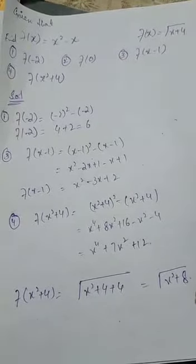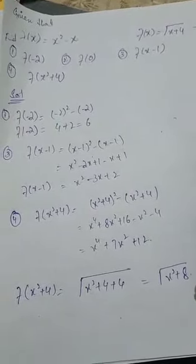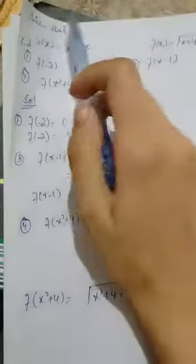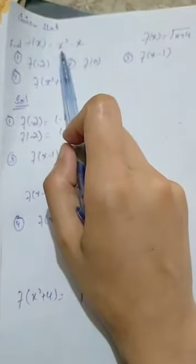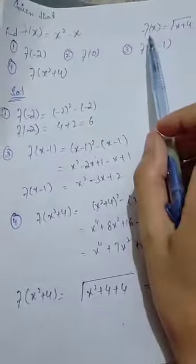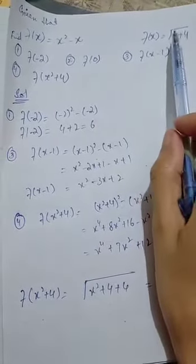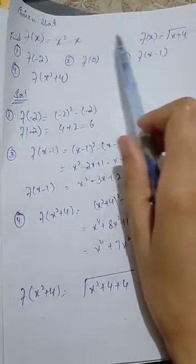Okay students, today we have to do Exercise 1.1. We have the first question of 1.1. Given that f of x is equal to x squared minus x and g of x is equal to square root of x plus 4, these two functions are given. What do we need to find?